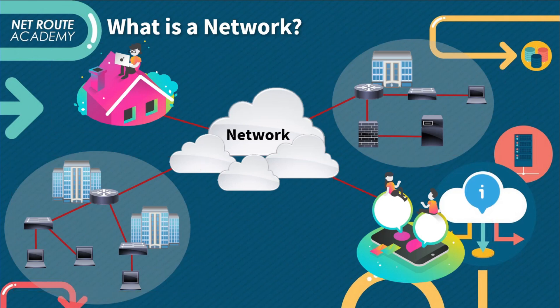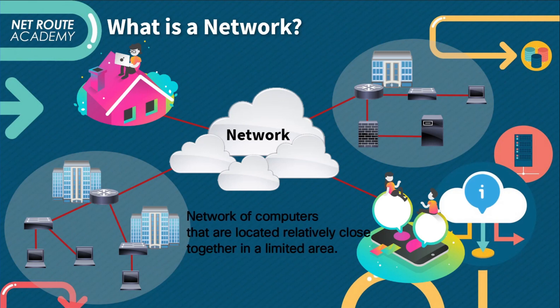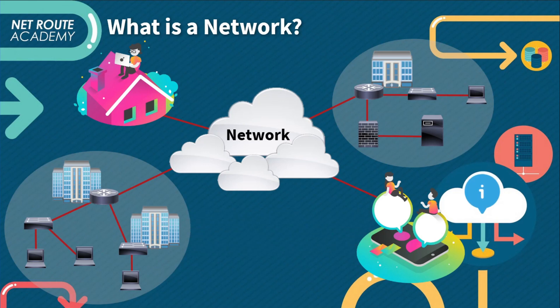A network carries data in many types of environments including homes, small businesses, and large enterprises. Large enterprise networks might have several locations that must communicate with each other. In this section we are focusing on some of the basics of a network. The first thing is our local area network. A LAN is a network of computers and other components that are located relatively close to each other in a limited area. LANs can differ widely in their size.